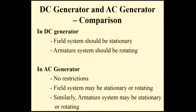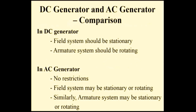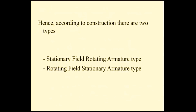Based on that, there are two types of alternator: one is rotating field stationary armature, and another is stationary field rotating armature. In a DC generator, the field should be stationary and the armature should be rotating — only then can the generated AC be converted into DC. But in an AC generator there is no such restriction, because it is supposed to generate AC. So either the conductor or the field may be stationary. In a DC generator only one type is possible — stationary field rotating armature — whereas in an AC generator both cases are possible.